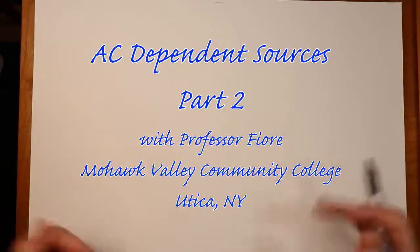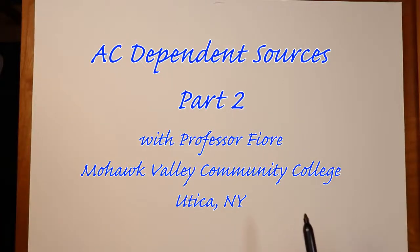And we're back for part two of dependent sources. In the first video we mentioned there were four different kinds of dependent sources: voltage controlled voltage sources, voltage controlled current sources, current controlled voltage sources, and current controlled current sources. These are sources the value of which is not fixed. It depends on some other parameter, a current or voltage elsewhere in the circuit. There's two broad classifications for the kinds of circuits.